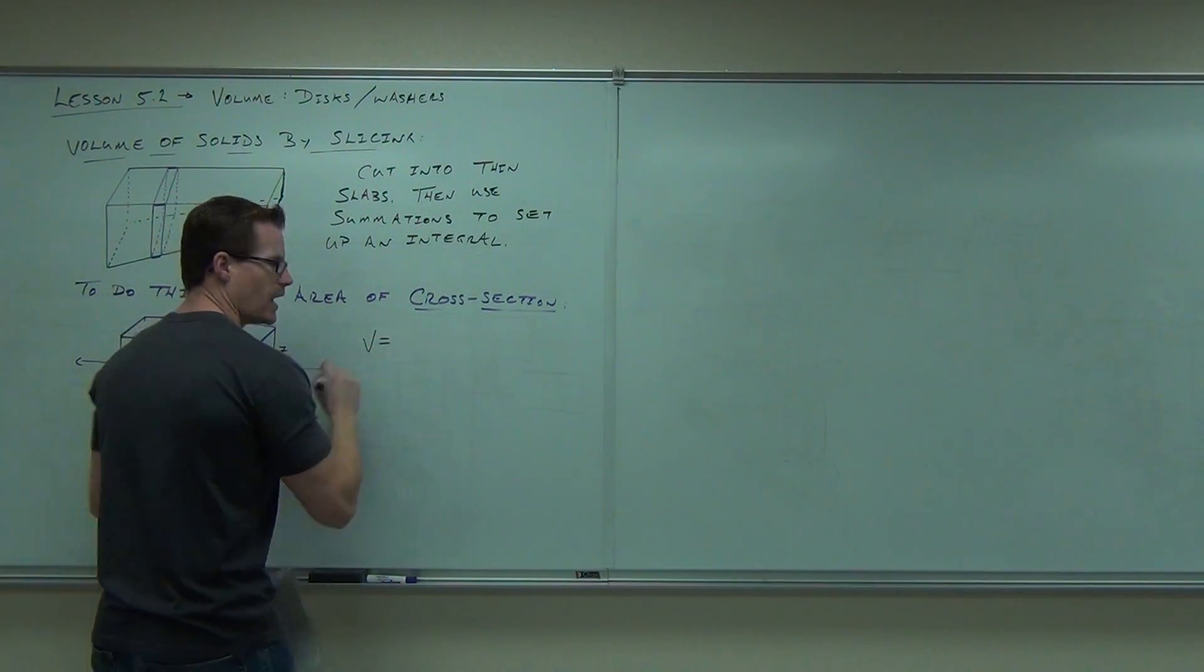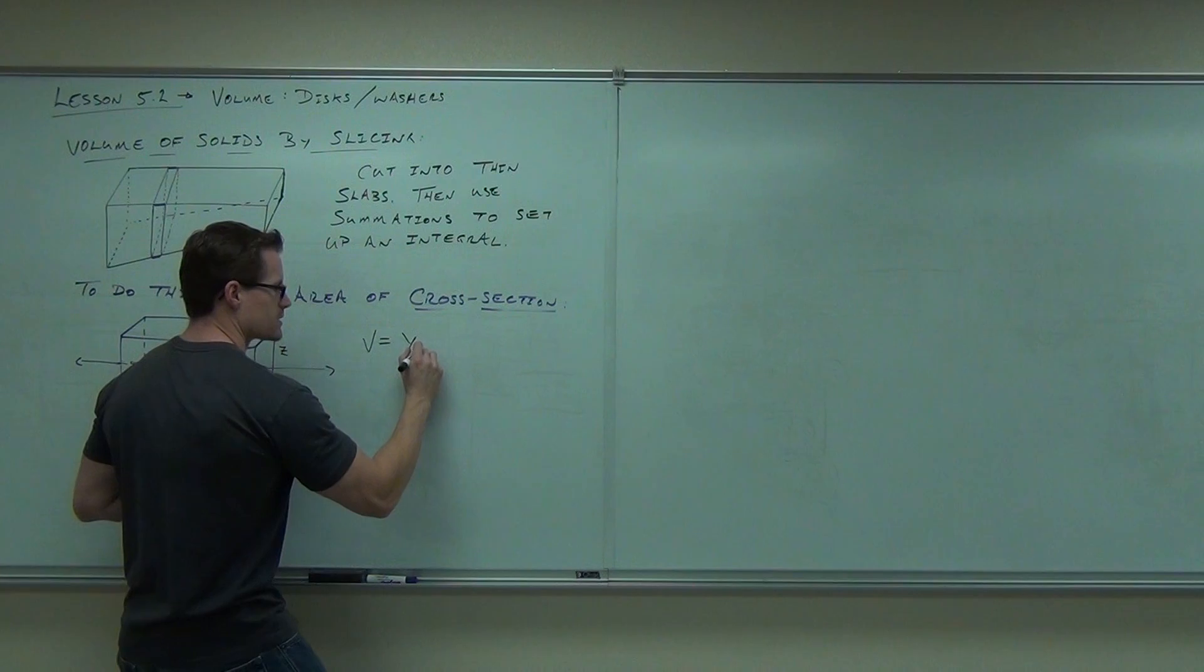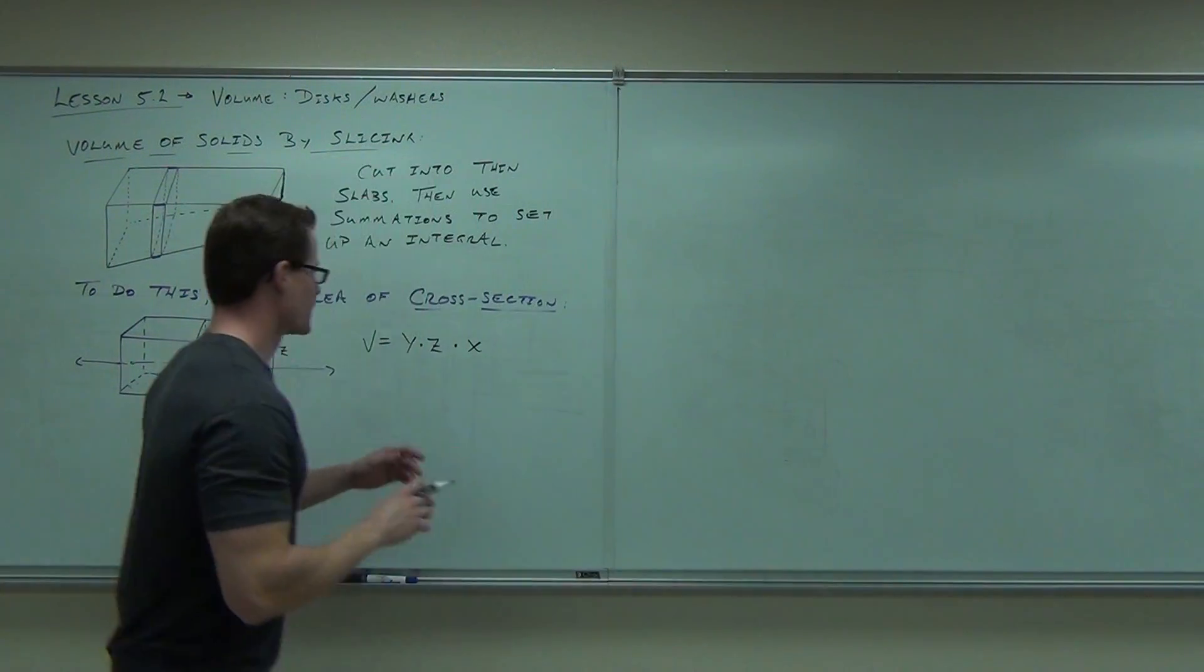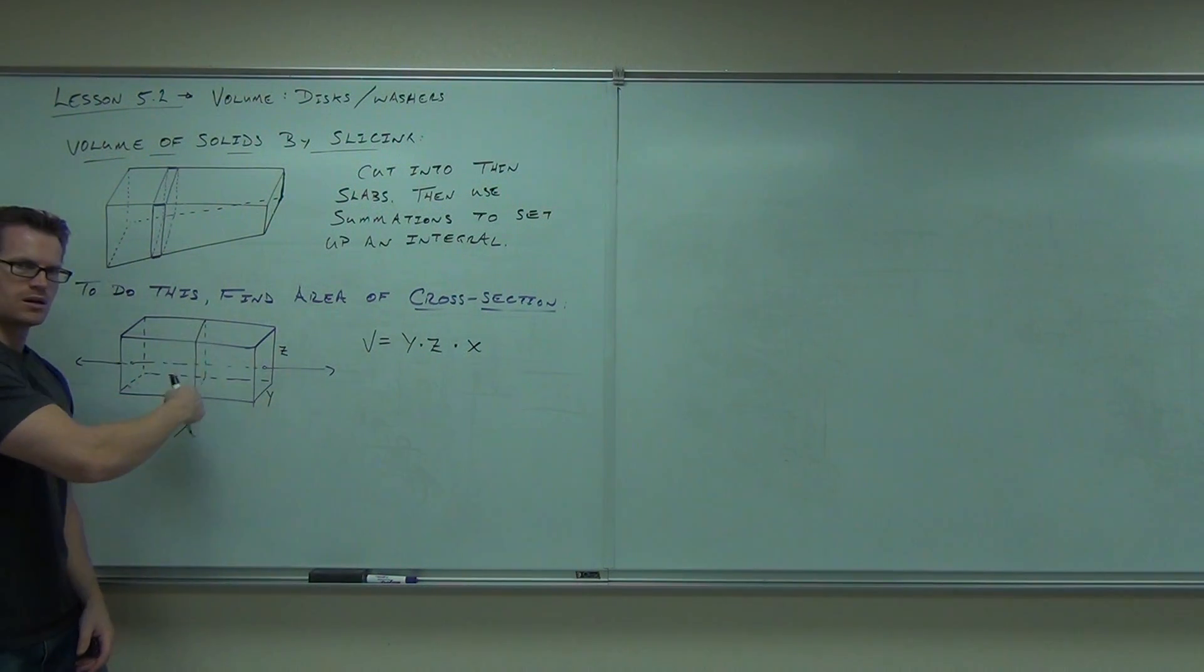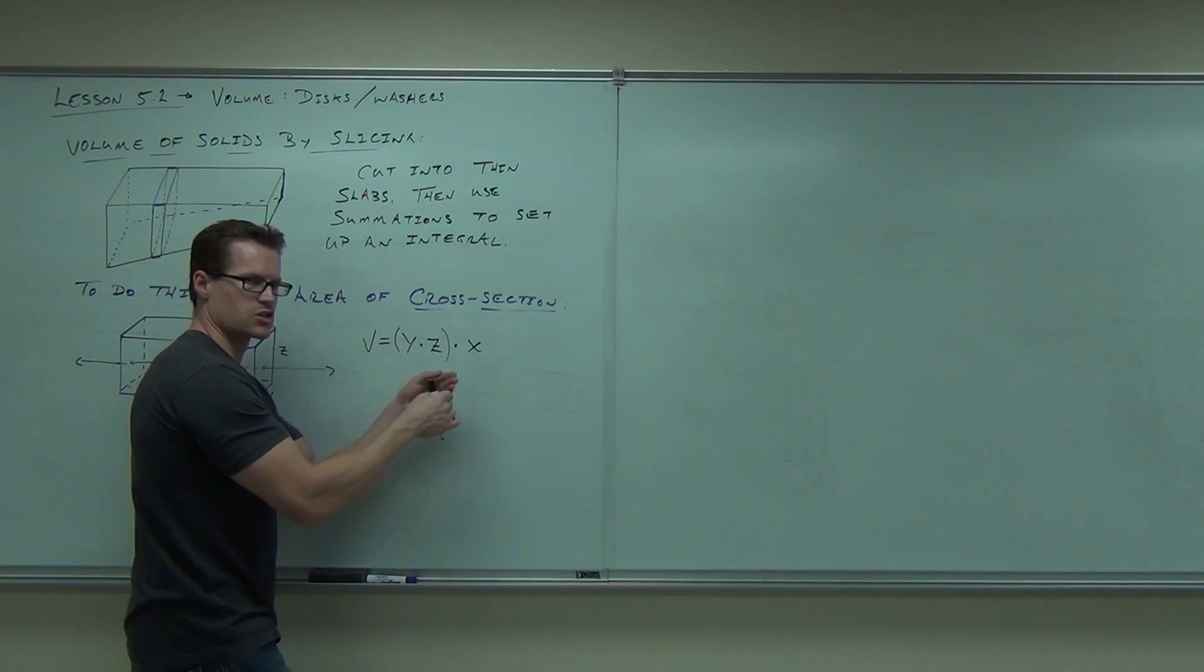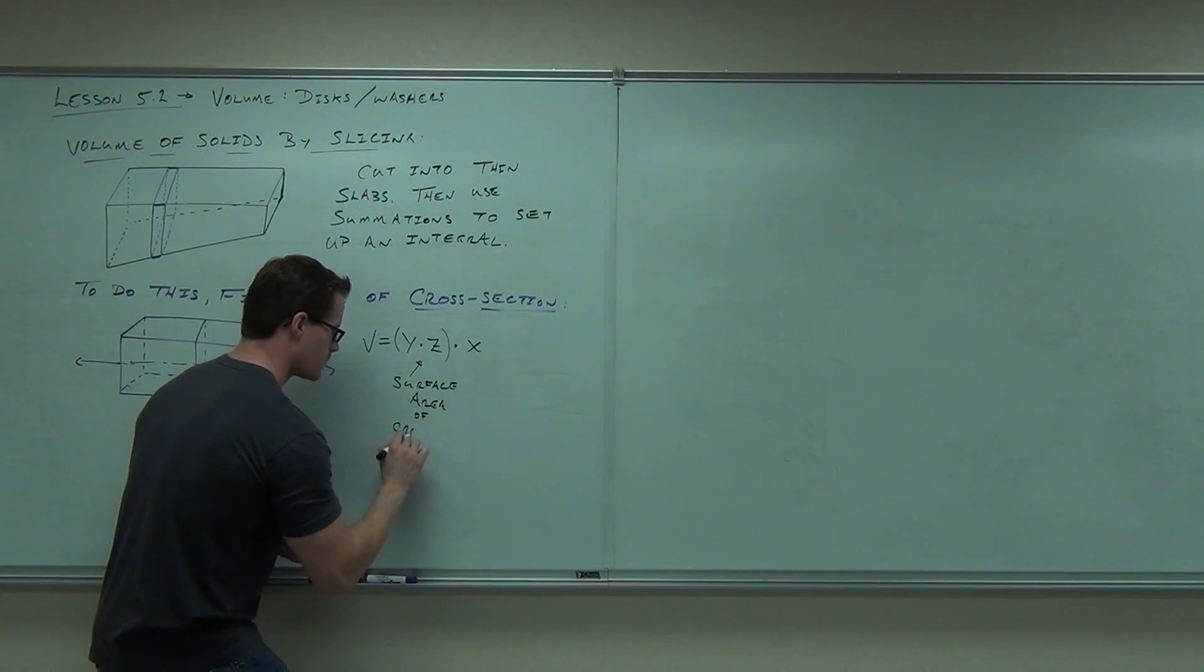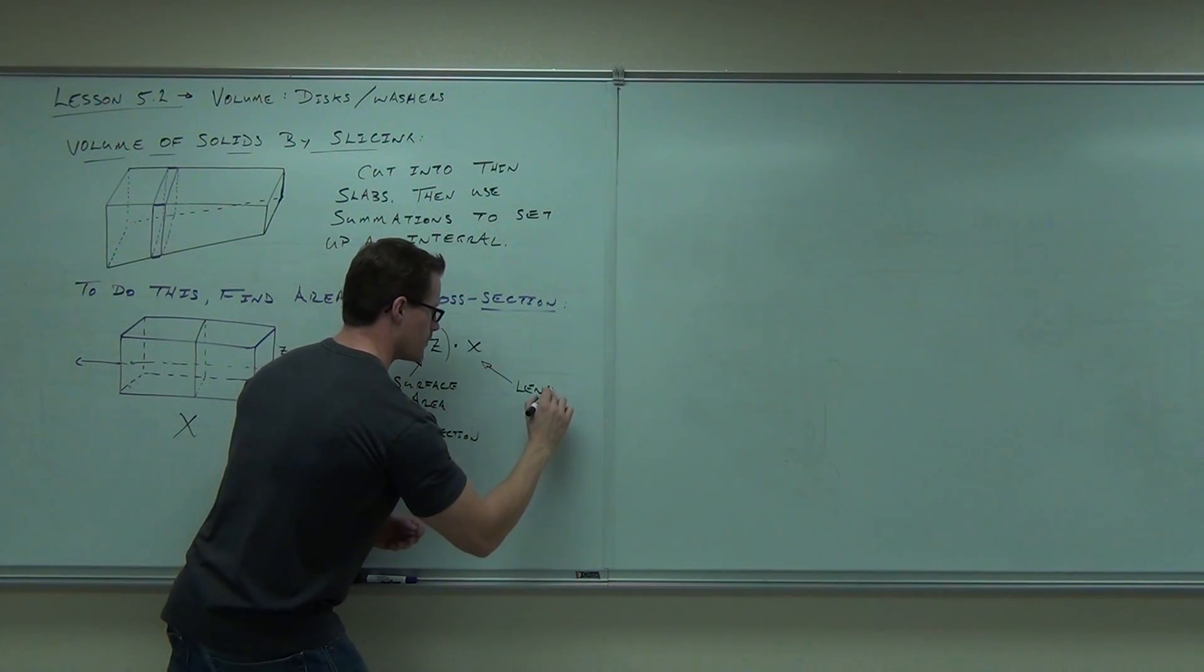If I asked you to find the volume of this whole thing, here's how you'd do it. You'd probably say, oh well, I know the volume of a rectangular prism. The volume of a rectangular prism is just the base times the height times the width, so basically it's the y times the z times the x. Now, I'm going to prove to you that this is the cross-sectional area times the length. What's y times z? y times z is the surface area of the cross-section. So basically, this says that's the surface area of the cross-section times x, the length.